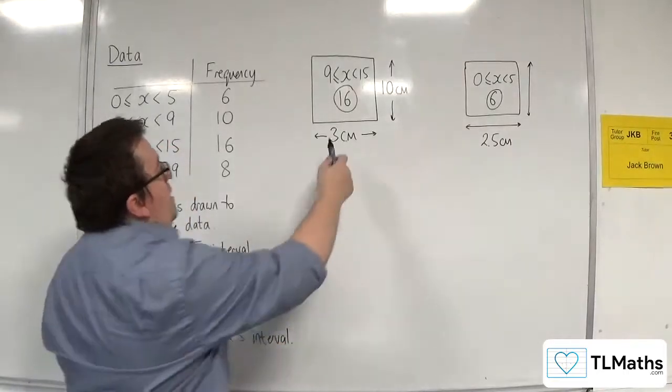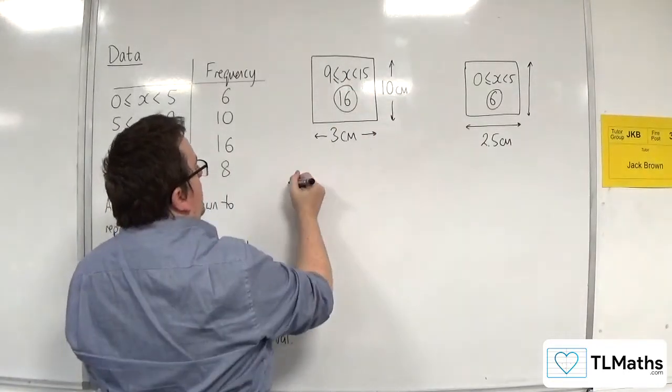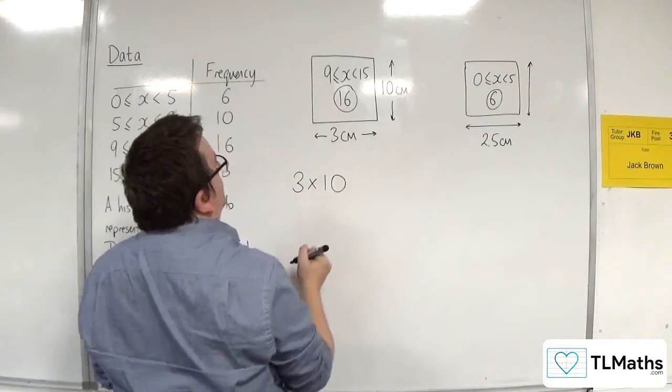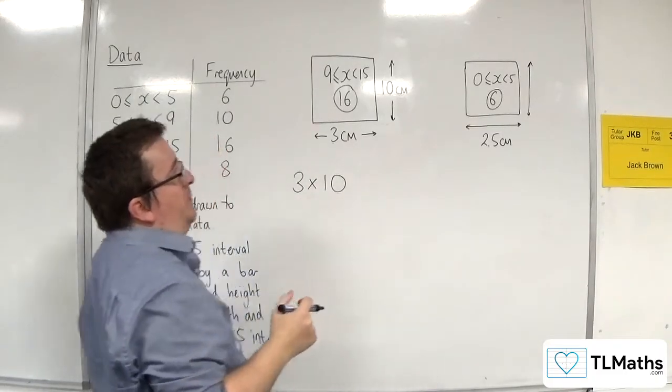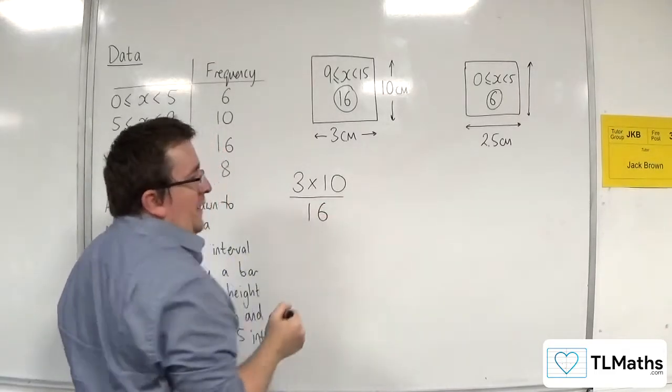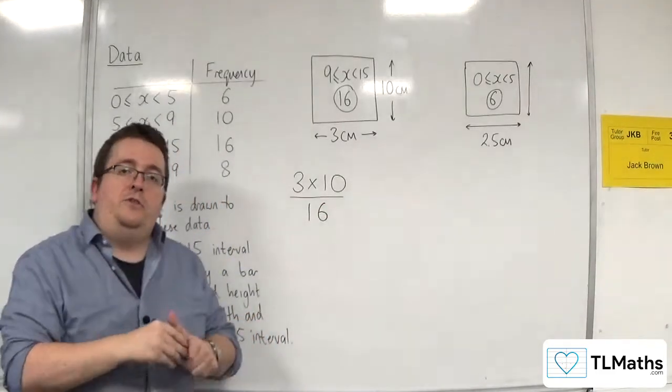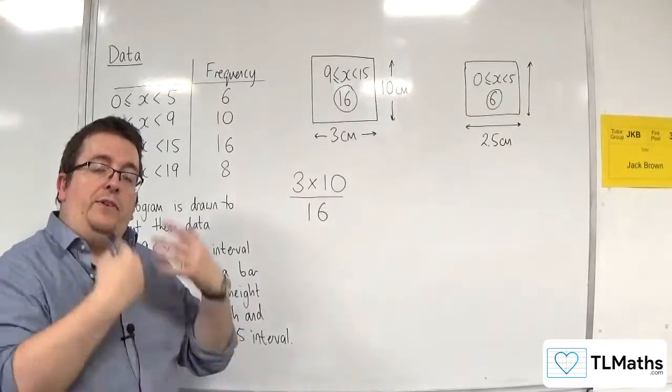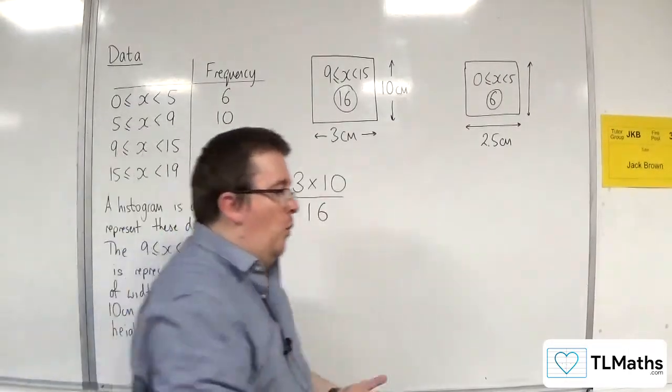Right. So, the area that I've got here would be 3 times 10. So, 3 centimeters times 10 centimeters. And I want to divide that by 16, because that's going to divide the area into 16 pieces. That's going to tell me the area of one person.